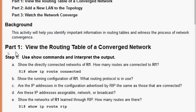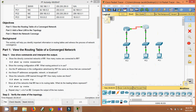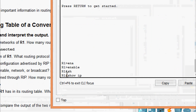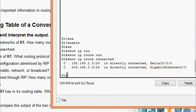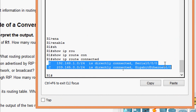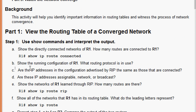This activity will help you identify important information in routing tables and witness the process of network convergence. Coming to Part 1, Step 1: use show commands and interpret the output. We need to show the directly connected networks of R1 using the command 'show ip route connected'. Here we can see two routes are connected to R1.